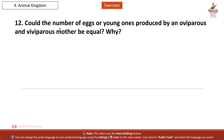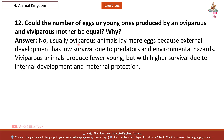Question 12: Could the number of eggs or young ones produced by an oviparous and viviparous mother be equal? Why? Answer: No. Usually oviparous animals lay more eggs because external development has low survival rates due to predators and environmental hazards. Viviparous animals produce fewer young but with higher survival due to internal development and maternal protection.